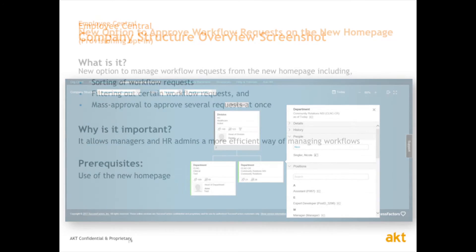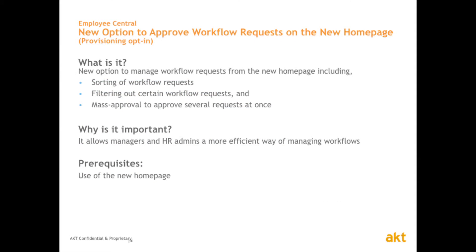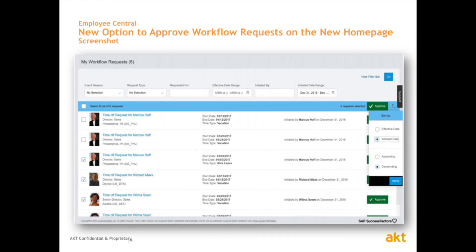The next feature has to do with workflow requests and how you manage those. This option allows you to sort workflow requests. If you have many workflow requests as an approver flowing into your homepage, you are now able to sort and filter to the one you want to focus on, and mass approve those requests. This allows you to free the bottleneck you might be experiencing and be more efficient. As you can see, you have the filter panel on the top where you can enter the parameters you want to filter the workflow upon, and then approve and sort those requests with the buttons here.